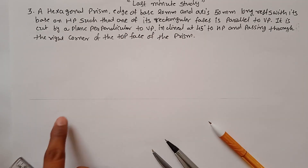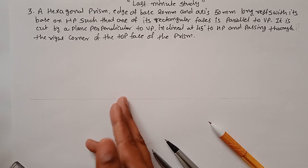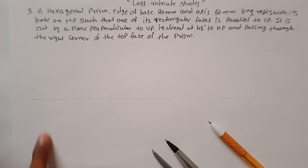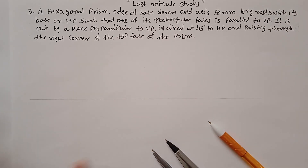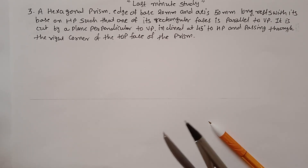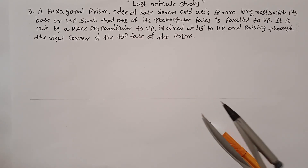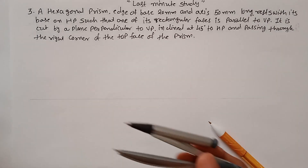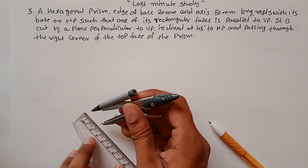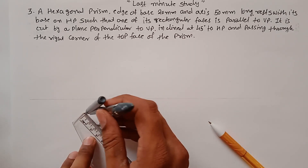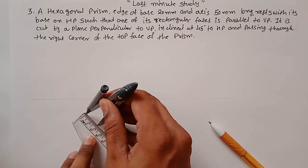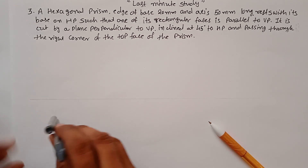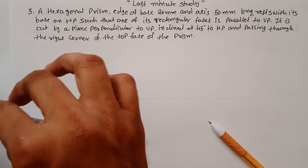To construct the top view, since one face is parallel to VP, you have to start your hexagon accordingly. Use the inscribed circle method — the hexagon is inscribed inside the circle. The side of the hexagon is 20mm, so measure a distance of 20mm and draw a light circle.